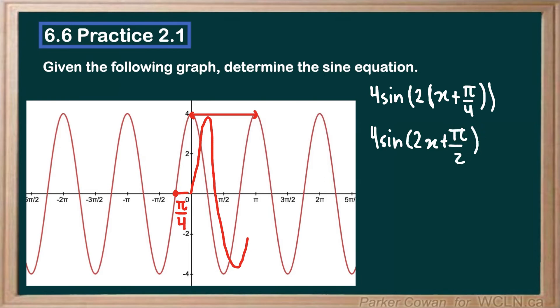So don't make that mistake, and don't first factor in the 2, because otherwise you'll end up with 2x plus π over 4, which is wrong.